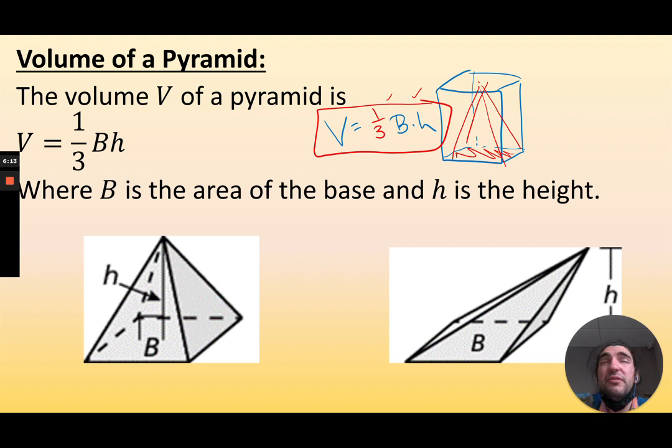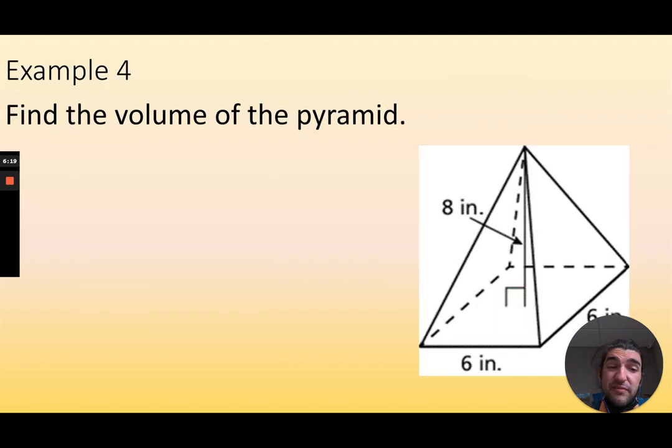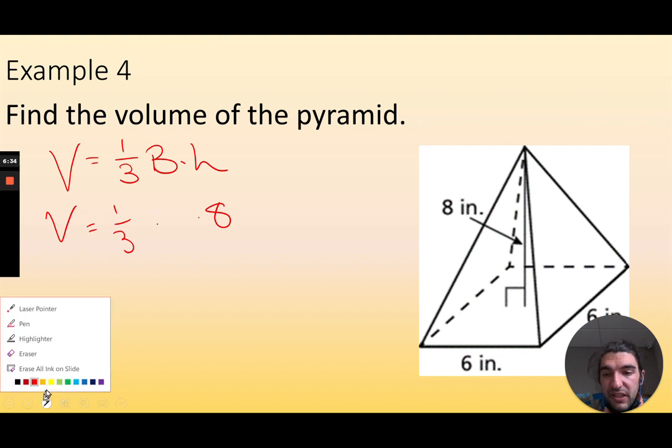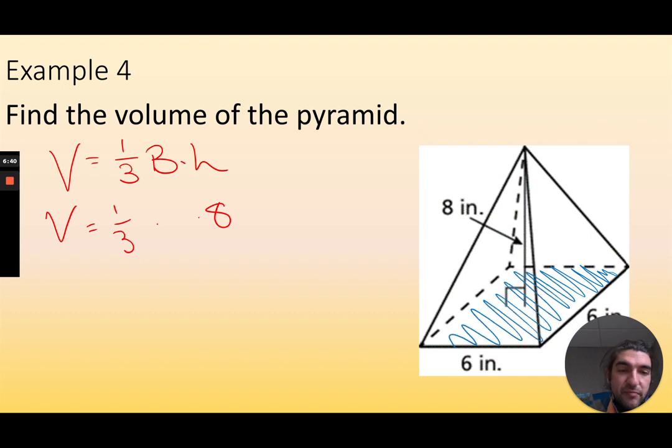Now what's nice is this will still work for any base. Triangular base, square, rectangle base, hexagon base, pentagon base, circle base, whatever. So let's just try a couple. And feel free to pause. Try this by yourself. So the volume of a pyramid is 1/3 base times height. What do I know? I know the height is 8 inches. I just need to find what is my base. So I need the entire size of this base of the pyramid. Well, it's a square. So its size is just 6 by 6. So I'm going to type in 1/3 times 6 times 6 times 8. And that should be the volume of this pyramid, which is 96 cubic inches.